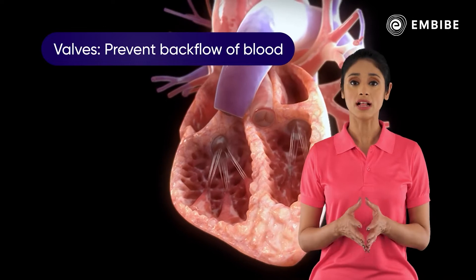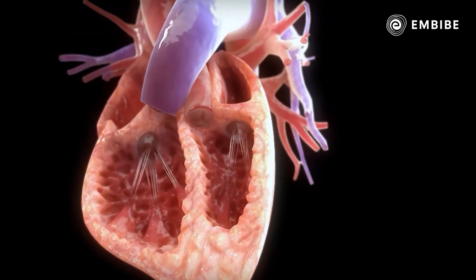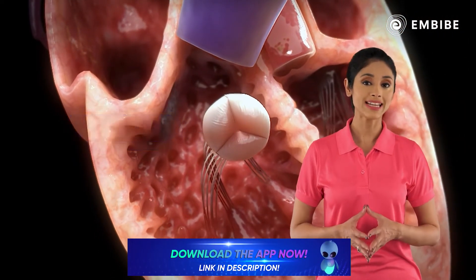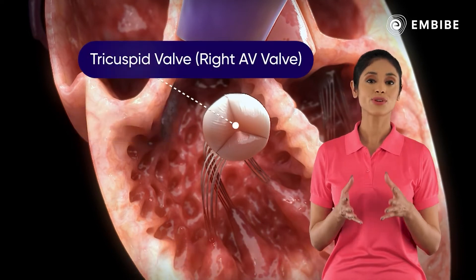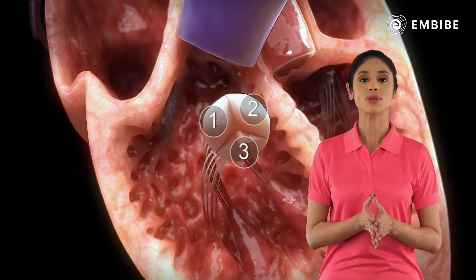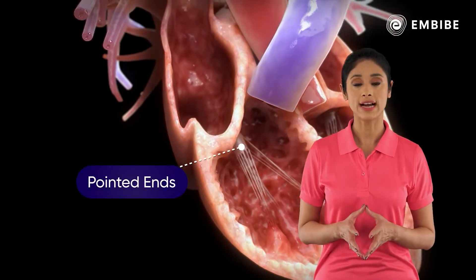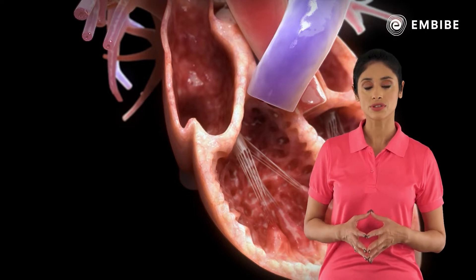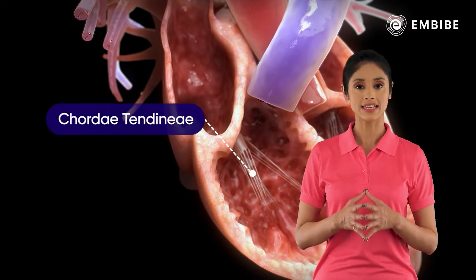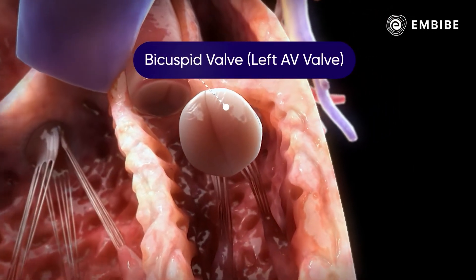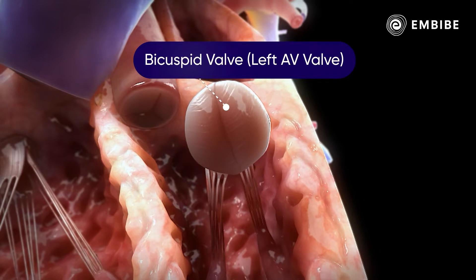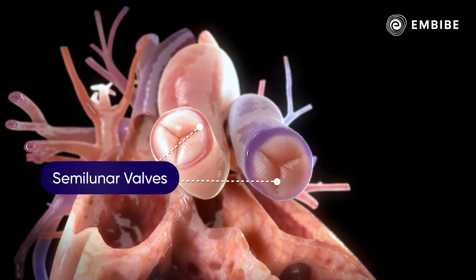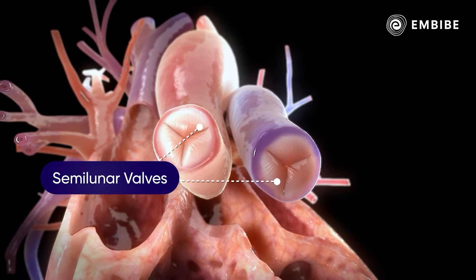There are a number of valves present in the chambers of the heart. The right atrioventricular valve lies between the right atrium and the right ventricle. It is called the tricuspid valve as it consists of three flaps. The pointed end of the flaps are projected towards the ventricles and are attached to the wall of the ventricles through tendon-like cords called chordae tendineae. The left AV valve is made up of two flaps and is thus called the bicuspid valve. The pulmonary artery and the aorta have semilunar valves, which prevent the backflow of blood into the ventricles.